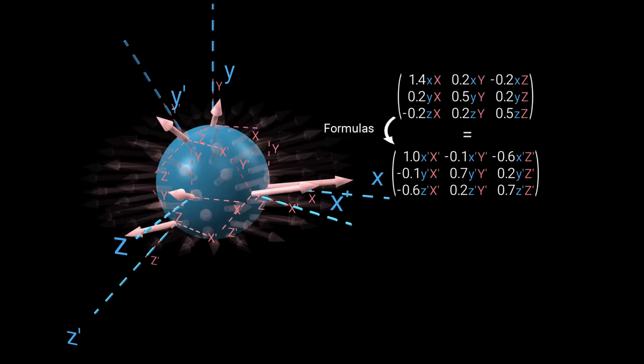There are formulas for transforming an array given how our coordinate system has changed. This is especially useful in relativity, where switching between coordinate systems is crucial.